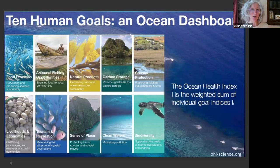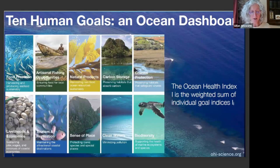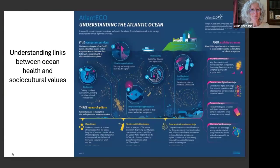The Ocean Health Index incorporates 10 different goals, which represent the benefits that the ocean provides to humans. These incorporate various elements: food provisioning, artisanal fishing opportunities, natural products, carbon storage, coastal protection, livelihoods and economies, tourism and recreation, sense of place, clean waters, and biodiversity. Within each of these goals, it's possible to collect data that's already been published — the tool is completely open access and uses existing data to understand the most recent trends over the last five years and what the future trend for a particular goal could be.